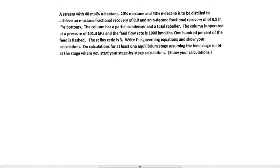In this video, we are going to be covering stage-by-stage calculations using the DePriester chart. The problem statement was given from Exam 2 this semester and reads as follows: a stream with 40 mol percent n-heptane, 20 mol percent n-octane, and 40 mol percent n-decane is to be distilled to achieve an n-octane fractional recovery of 0.9 and an n-decane fractional recovery of 0.8 in the bottoms. The column has a partial condenser and total reboiler, operated at 101.3 kPa with a feed flow rate of 1,000 kmol/hr. 100% of the feed is flashed and the reflux ratio is 3. We need to write the governing equations and show calculations for at least one equilibrium stage, assuming the feed stage is not at the stage where we start our stage-by-stage calculations.